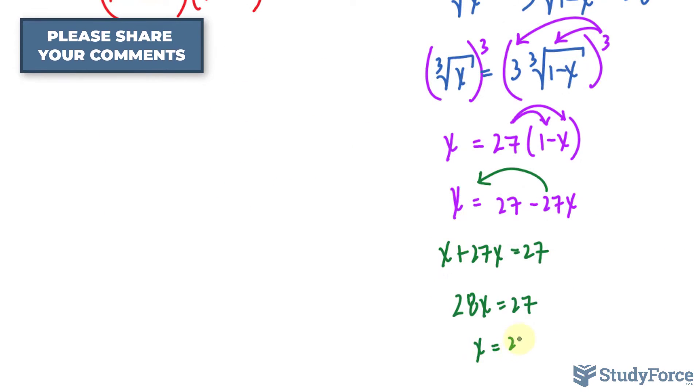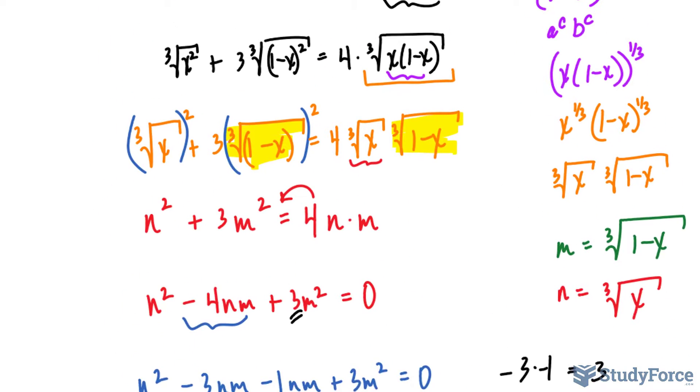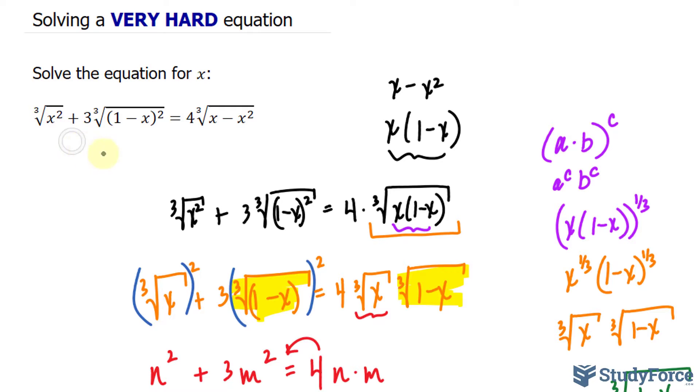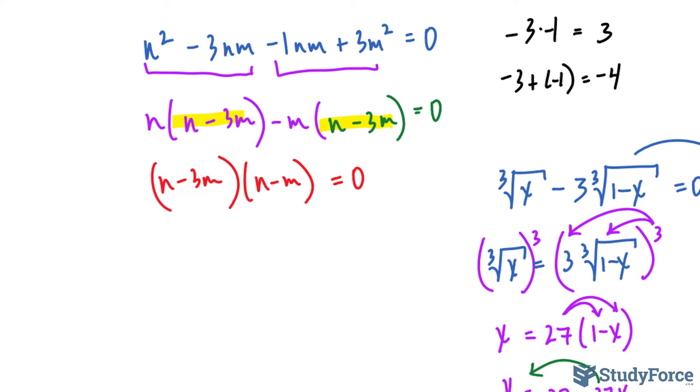And therefore, x is equal to 27 over 28. That is one of the real roots for this equation. And it also fits in the domain of this equation. So we know it's correct. Now we will do the other factor.